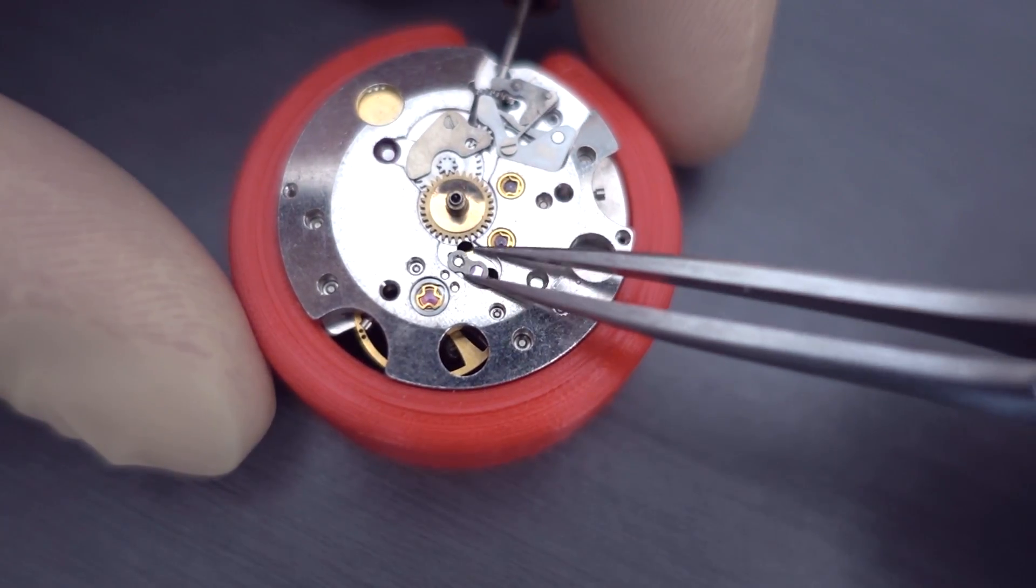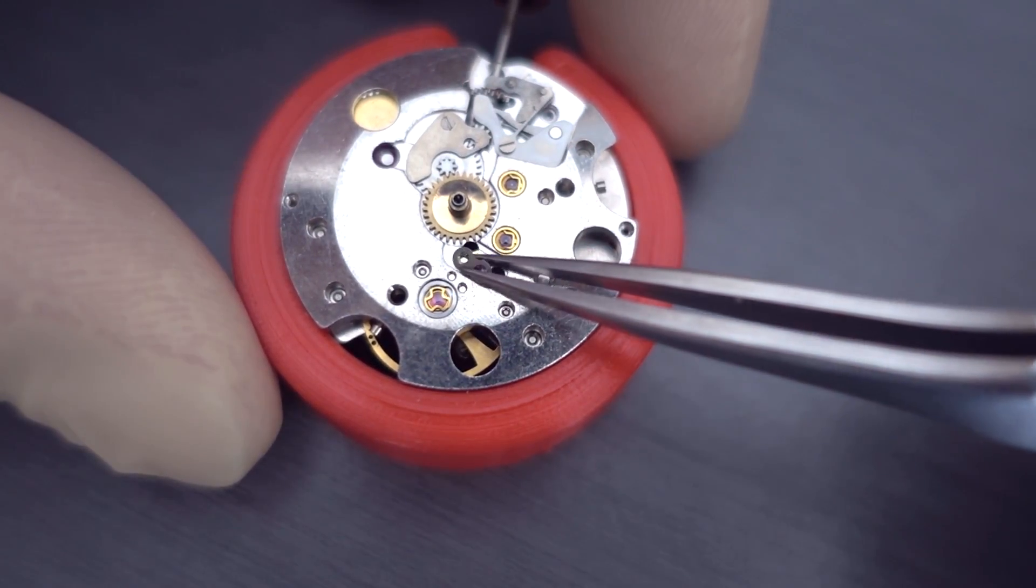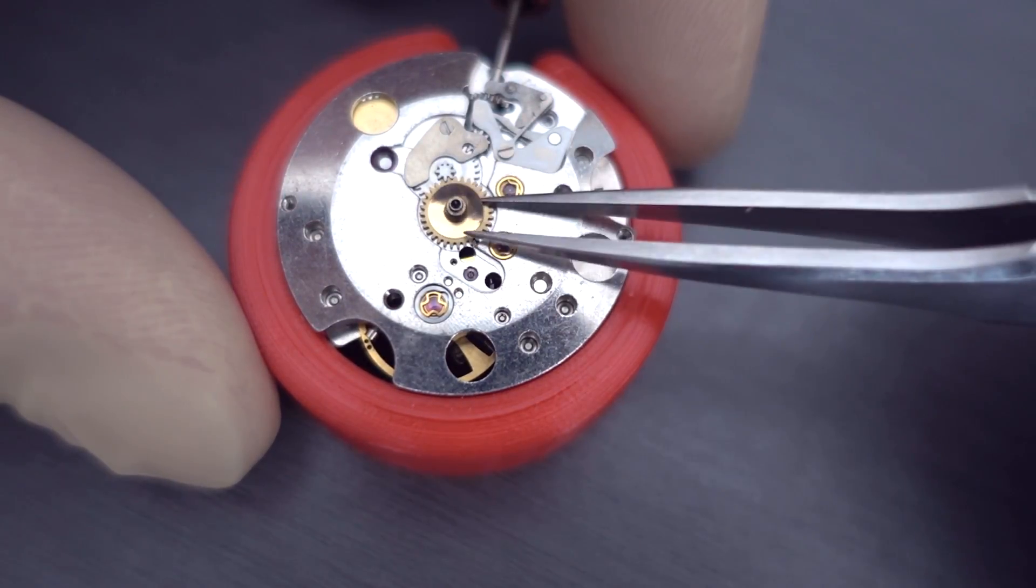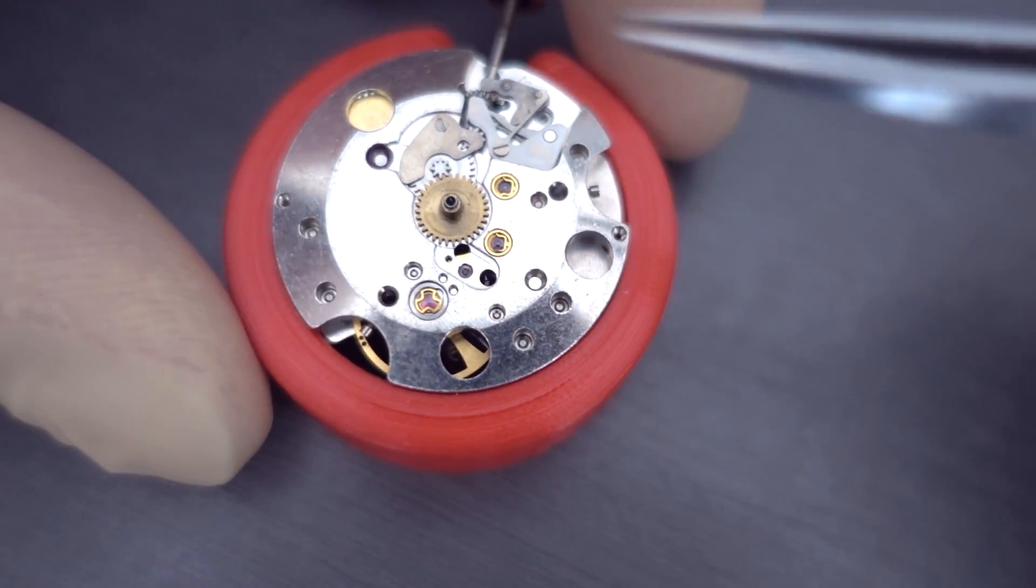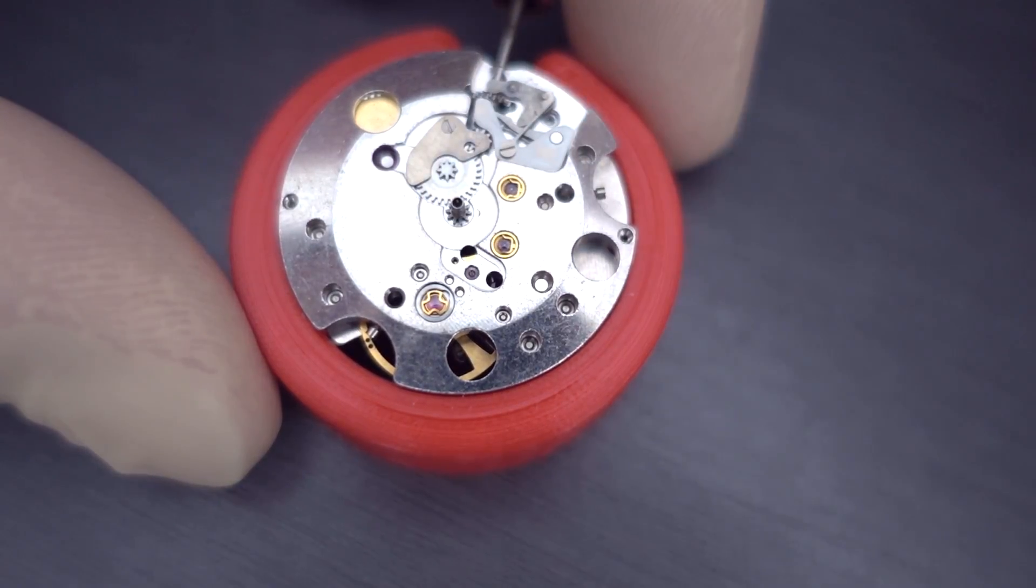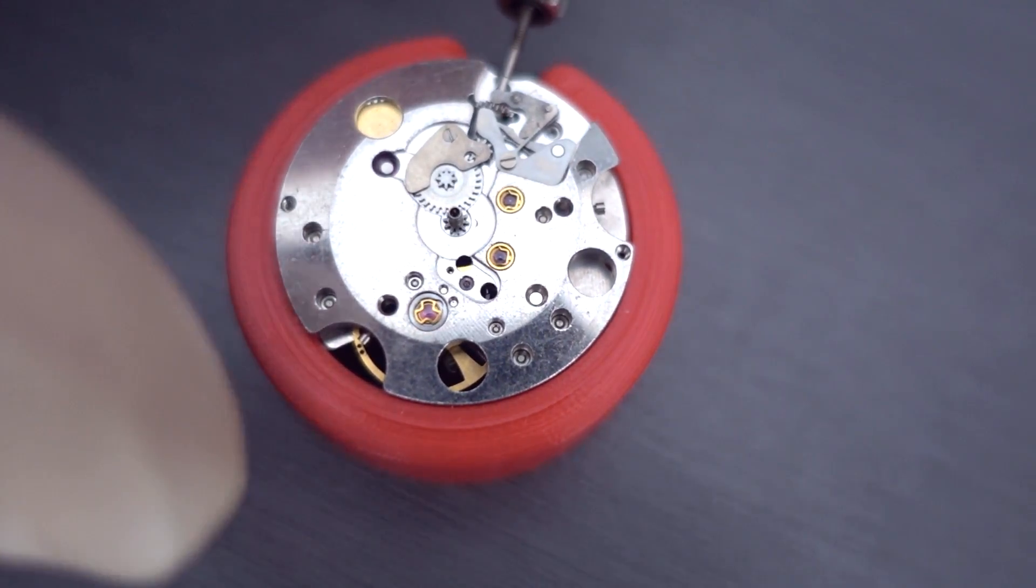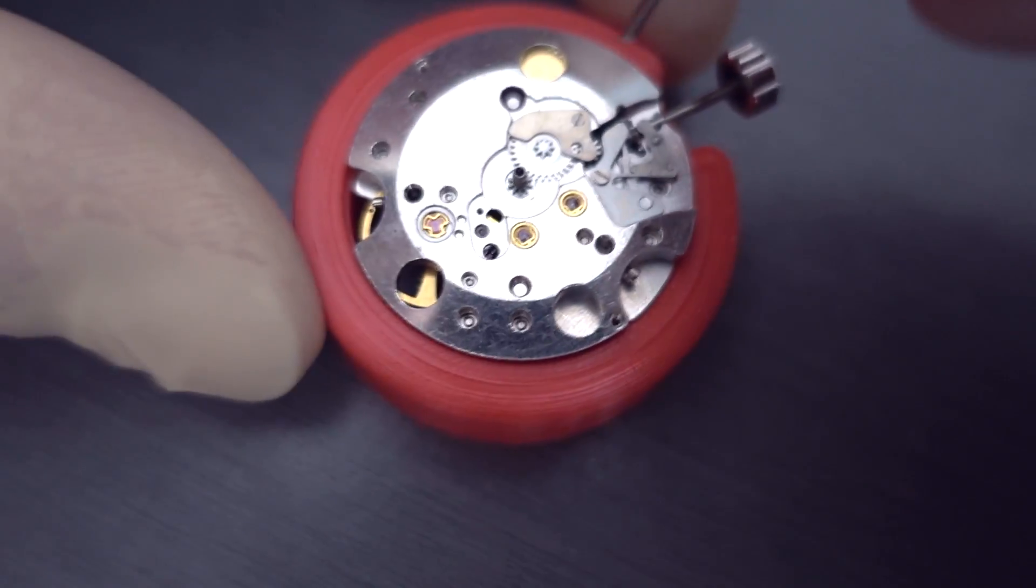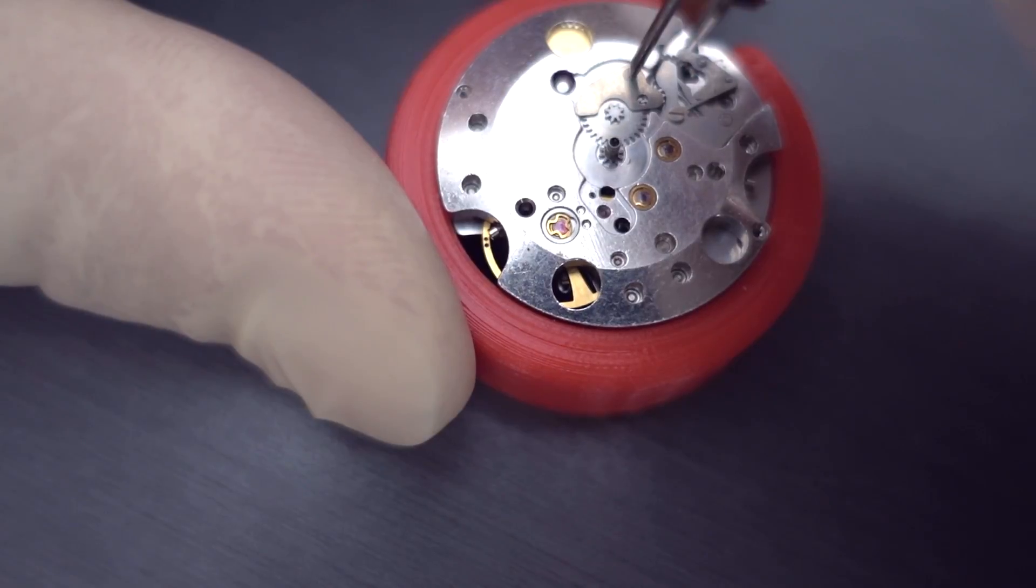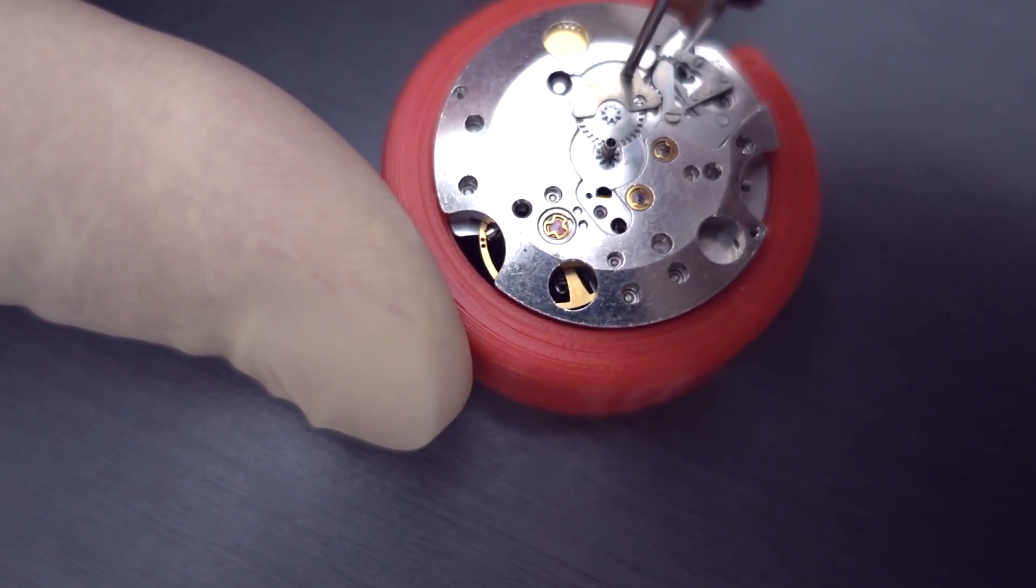We're just at the moment looking at one of the capsules there which is on the escape wheel. We're on the dial side at the moment or calendar side but there's no calendar on this. And we're just removing the winding wheel there.